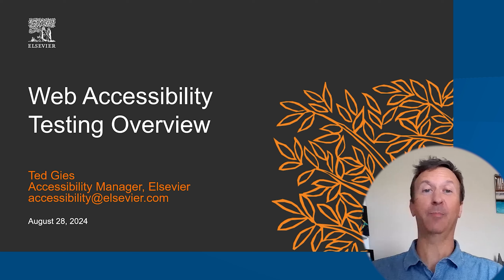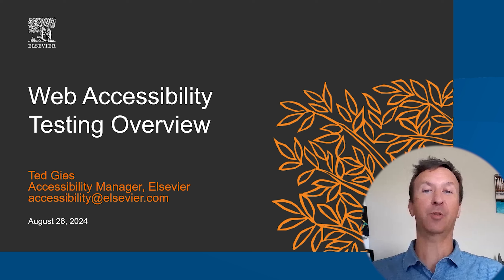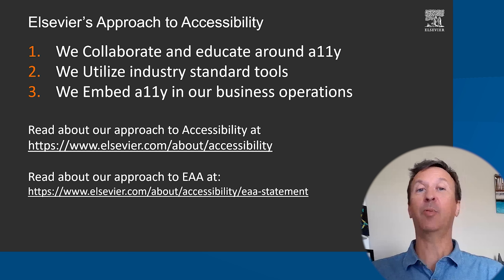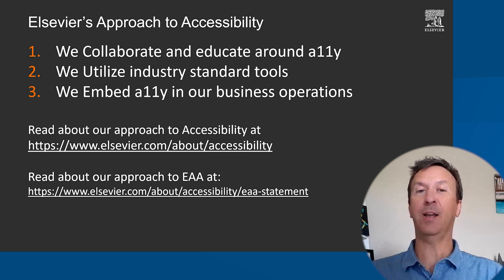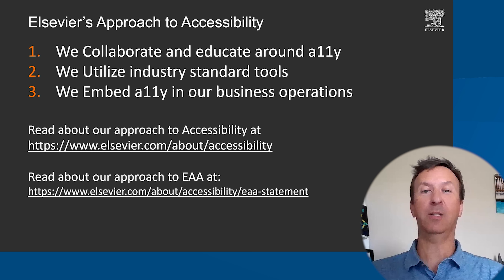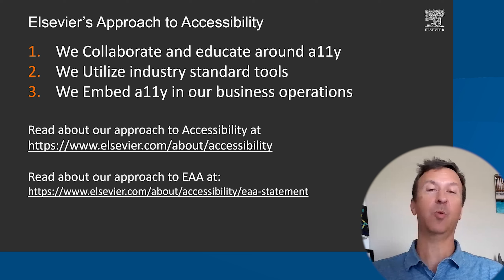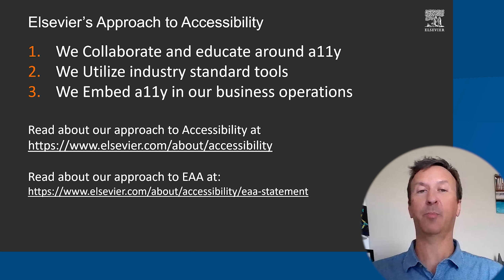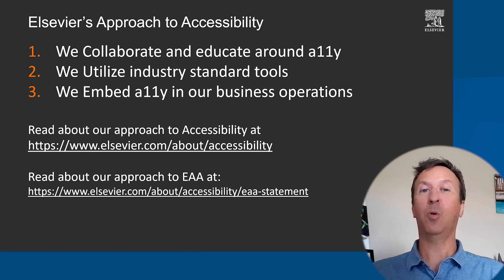Today, I'm going to be providing a brief overview of techniques and tools used to test web pages for accessibility, which should be part of your strategy for meeting the European Accessibility Act and other regulations. Our approach to accessibility at Elsevier is underpinned by three guiding principles: we collaborate and educate around accessibility, we utilize industry standard tools, and we embed accessibility in our business operations. Actively practicing these three key principles requires conducting frequent accessibility testing throughout the product development lifecycle. To learn more about our approach, visit our Elsevier Accessibility Statement and just-launched European Accessibility Act Statement.